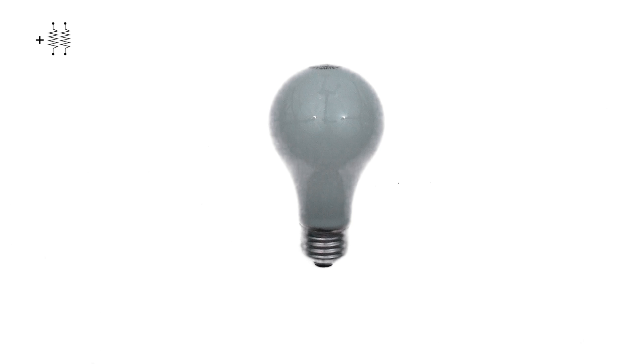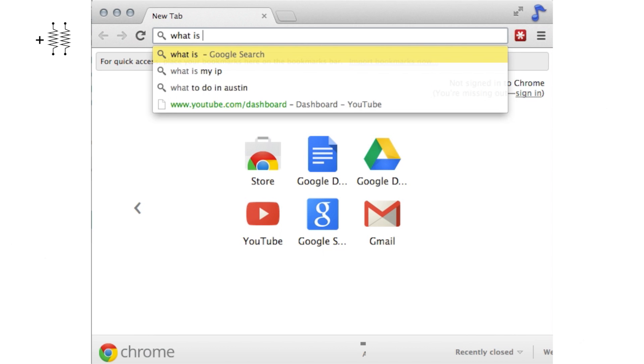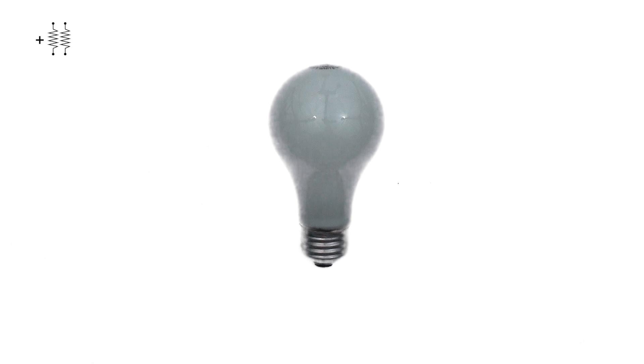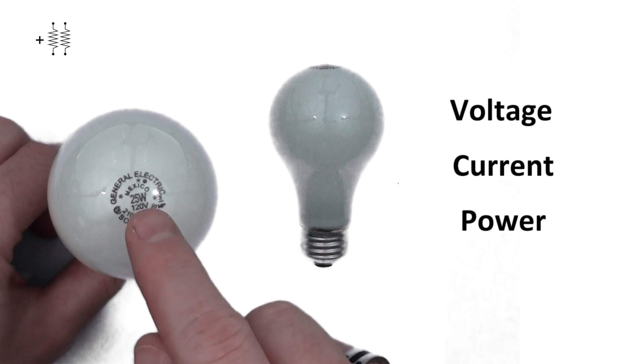Instead, we're going to stick to this light bulb for two reasons. First, everyone knows what it is. Well, everyone searching the internet for a video on electricity would know what a light bulb is. And number two, to understand the difference between voltage, current, and power, all we have to do is look at the top of a light bulb.